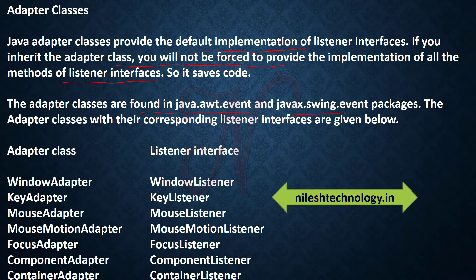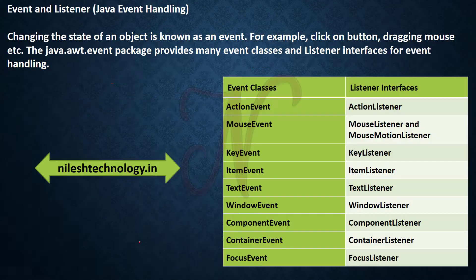The adapter classes are found in java.awt.event and javax.swing.event. Some adapter and listener pairs include: WindowAdapter and WindowListener, KeyAdapter and KeyListener, MouseAdapter and MouseListener, MouseMotionAdapter and MouseMotionListener, FocusAdapter, ComponentAdapter, and ContainerAdapter. There are also corresponding events such as mouse, key, text, window, component, container, and focus events.